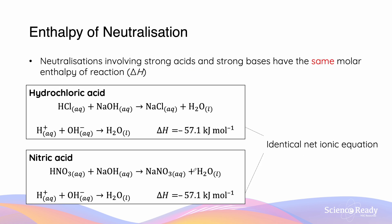A neutralization reaction involving both a strong acid and a strong base is going to have the same molar enthalpy of reaction — this is quite important to remember. The reason is that both strong acids and strong bases will fully ionize, leaving hydroxide and hydrogen ions in solution. They're going to have the exact same net ionic equation: H⁺ + OH⁻ → H₂O, with a ΔH of −57 kJ/mol.